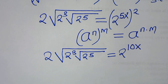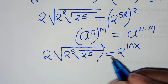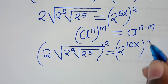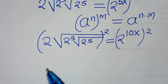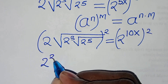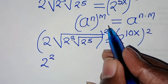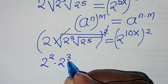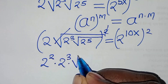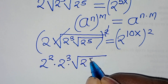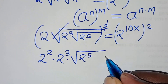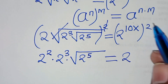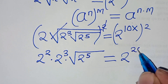The next step is again to square both sides, so that now here we have 2 to the power of 2, then we eliminate the second square root sign, so times 2 to the power of 5. This is equal to 2 to the power of 10x times 2, which is 20x.